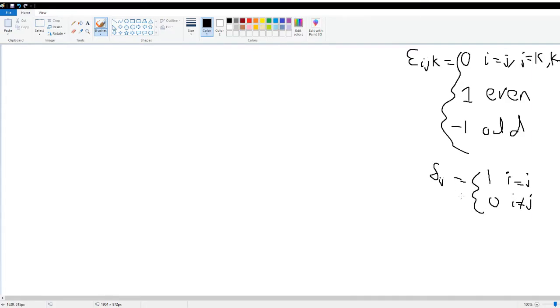Then the one relevant identity that we're going to use in this proof is that when you have epsilon_ijk times another one with subscripts i m n, this is the same thing as delta_jm times delta_kn minus delta_jn delta_km.